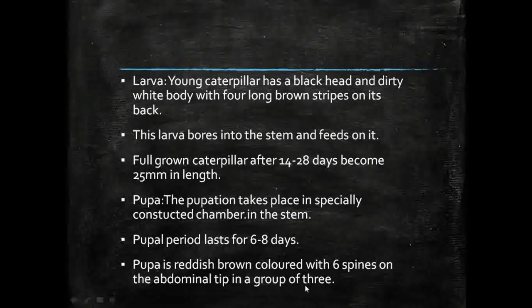This pupa is reddish-brown colored with six spines on the abdominal tip arranged in a group of three. This is an important identification mark of the pupa — brown-colored spines present at the abdominal tip in groups of three.